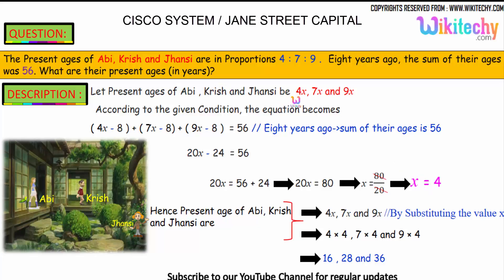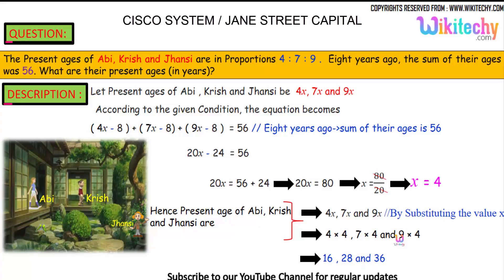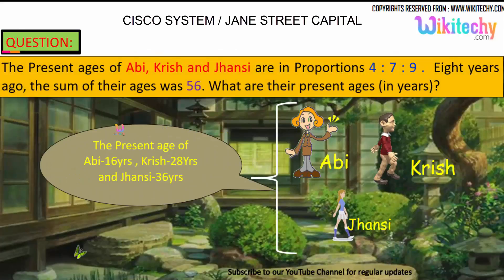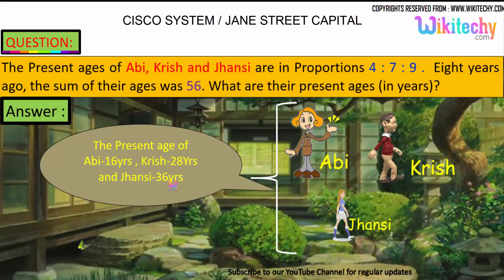The present ages are 4x, 7x, and 9x. Substituting x = 4: 4×4 = 16, 7×4 = 28, and 9×4 = 36. So the present age of Abhi is 16, Krish is 28, and Jansi is 36. The final answer is 16, 28, and 36.